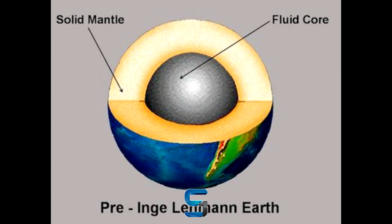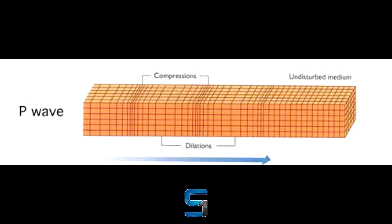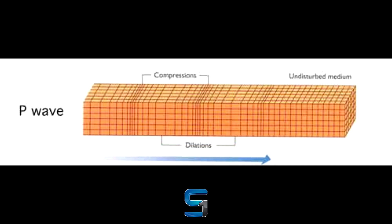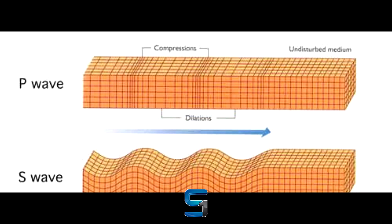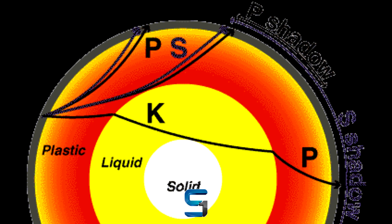At the time, scientists believed the Earth's core was made of molten rock surrounded by a solid mantle, then the crust. This model explained why when big earthquakes occurred, certain types of seismic waves weren't detected in particular places on the other side of the world.